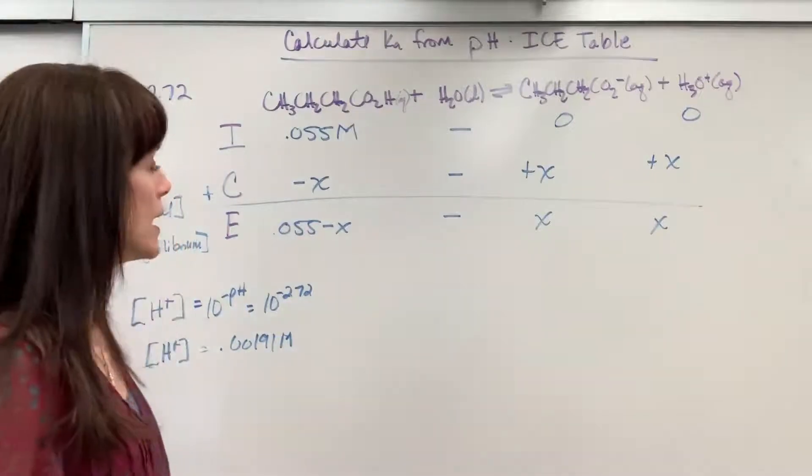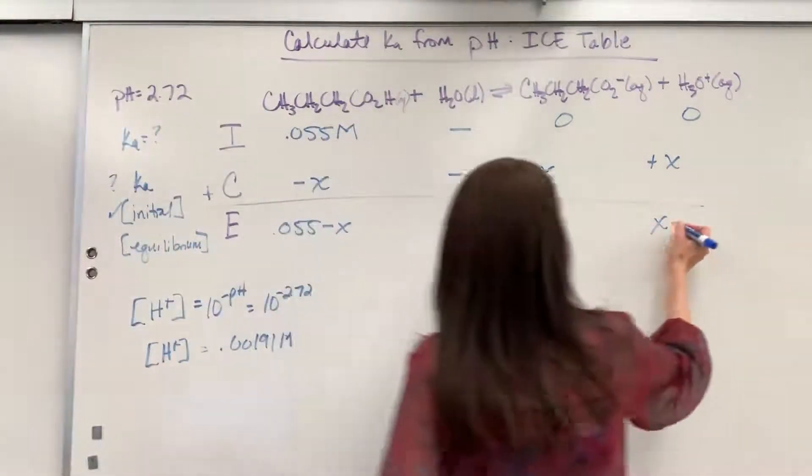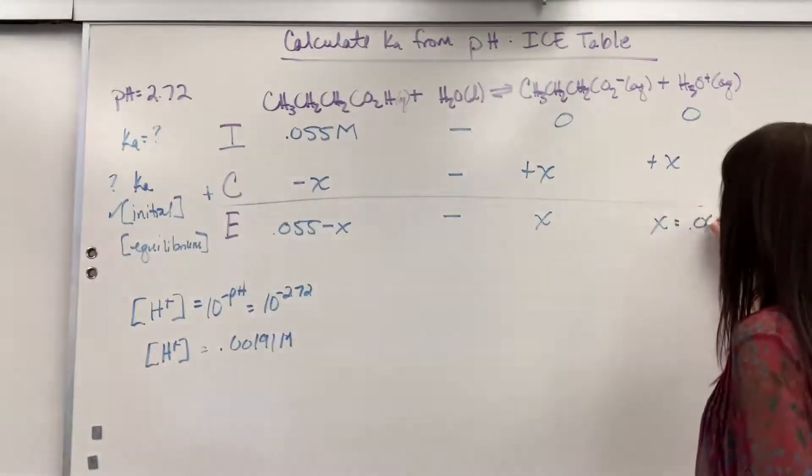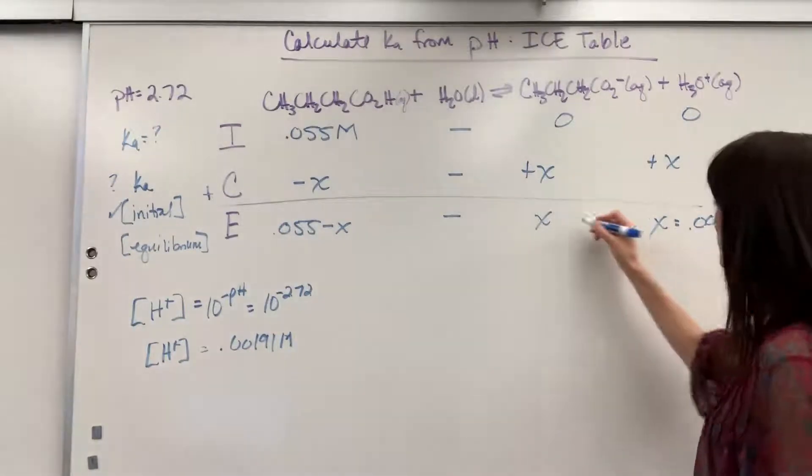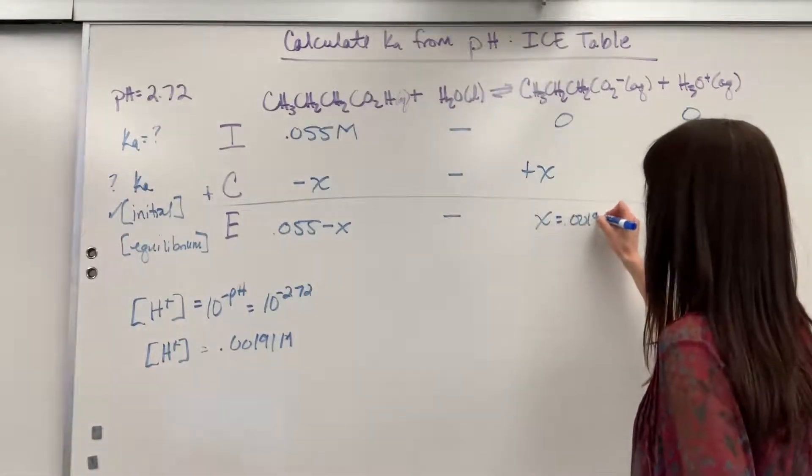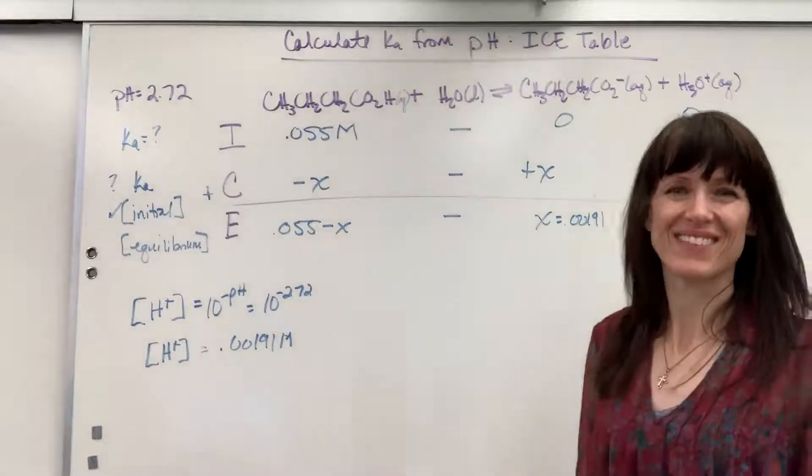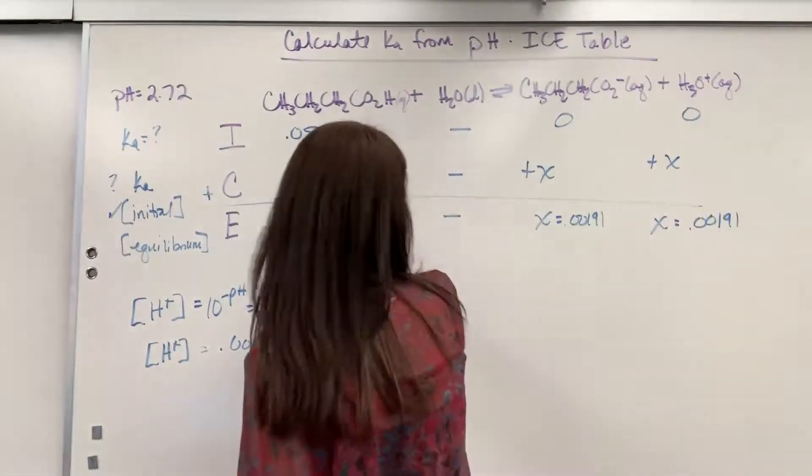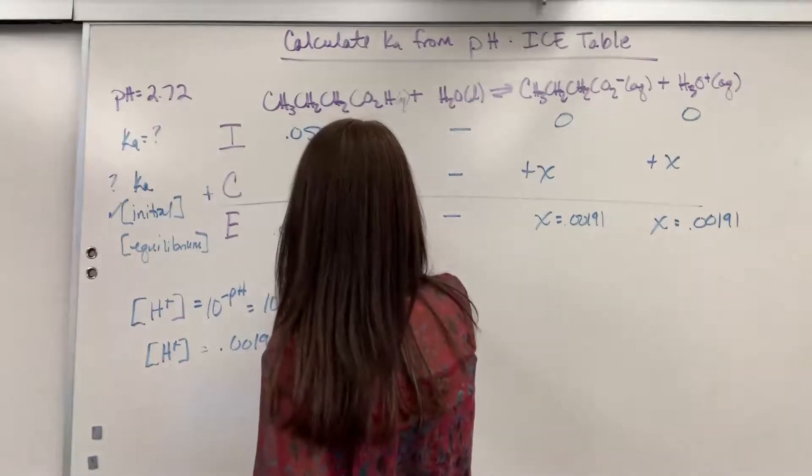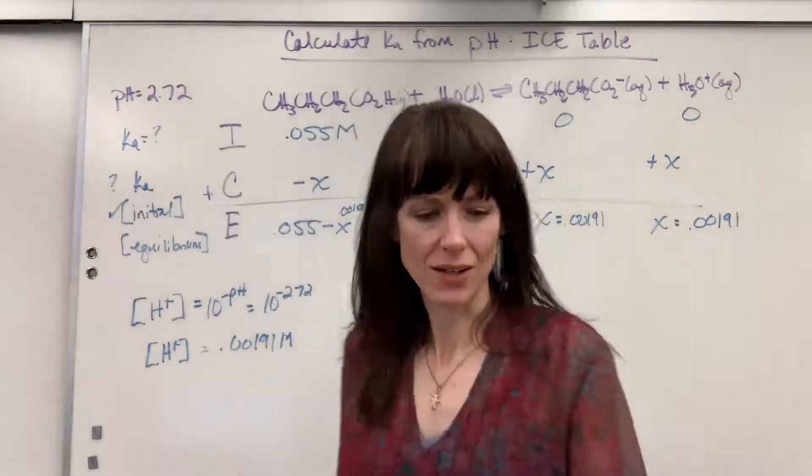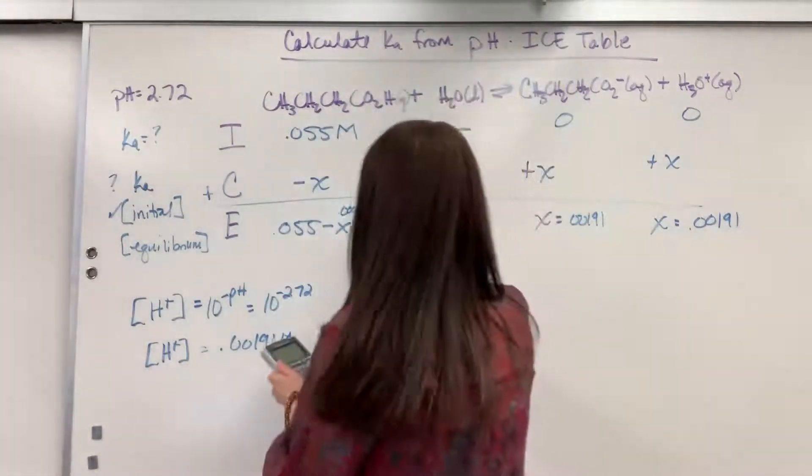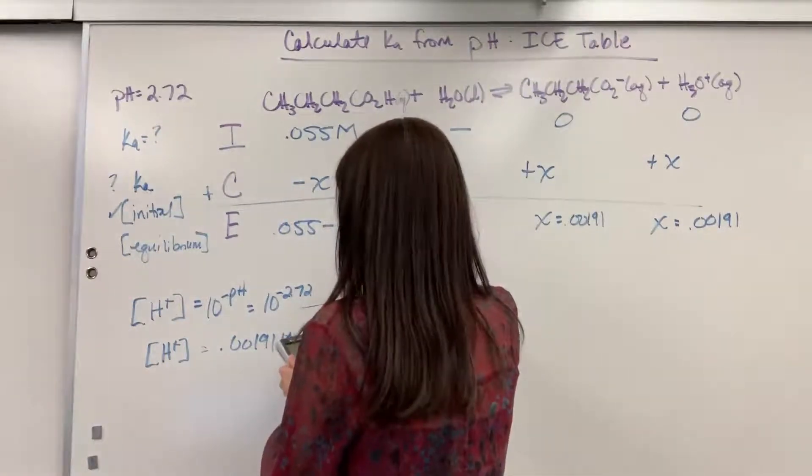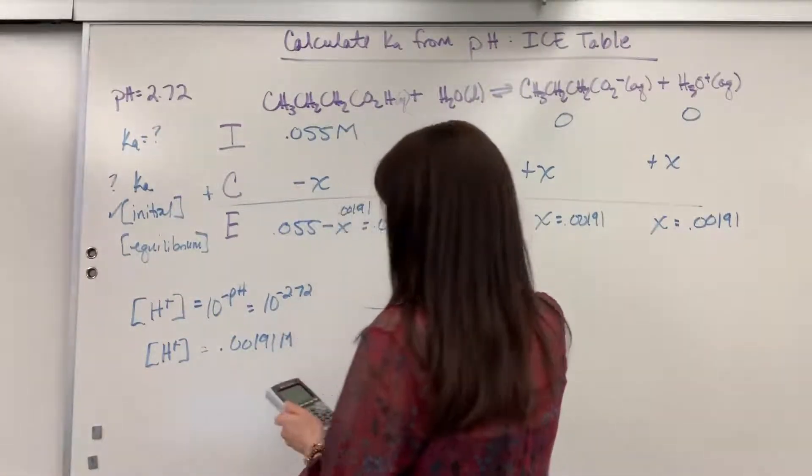So let's go ahead and put this here. The X equals 0.00191. I'll put this here. 0.00191. And I can just plug in X for everything. If I plug in X right here, 0.00191, we are going to get the concentration is 0.0531.